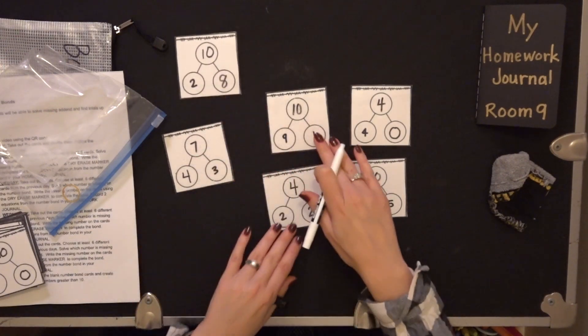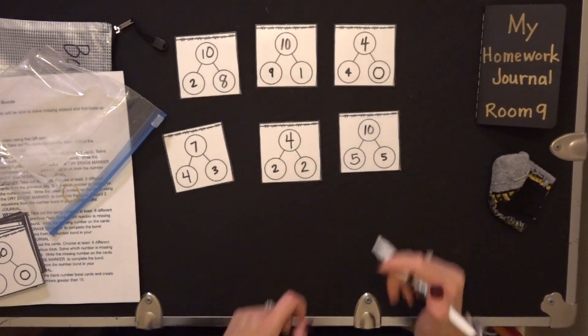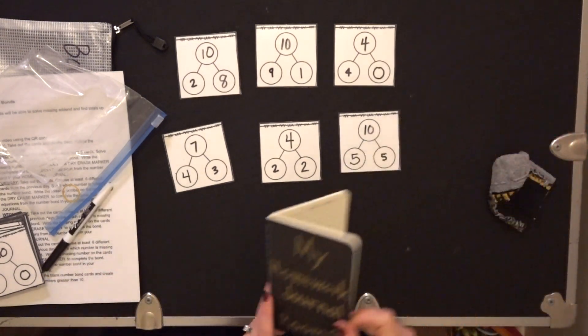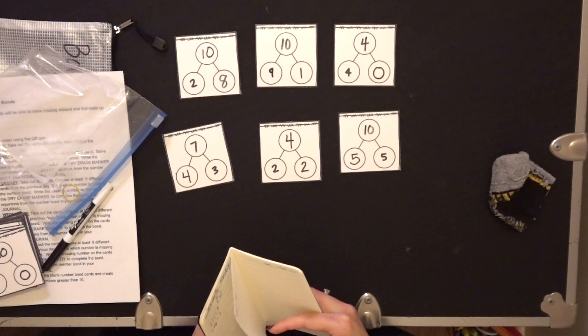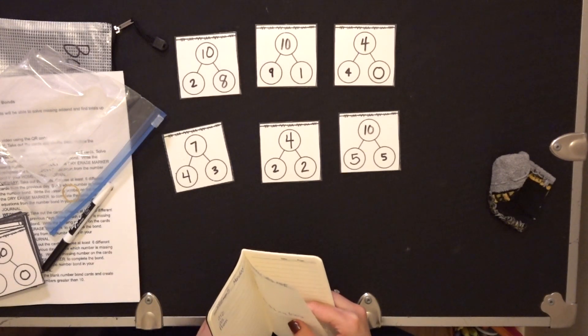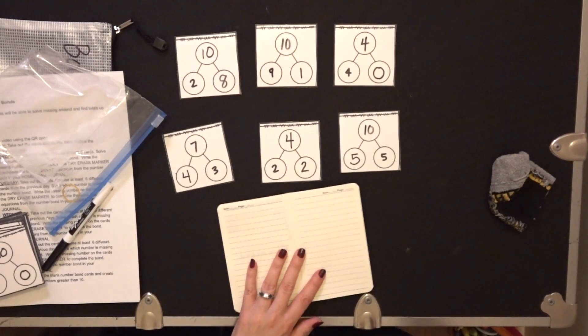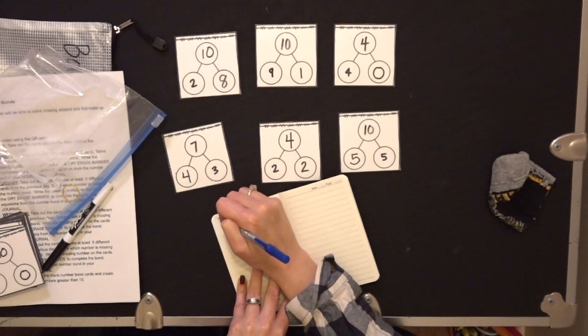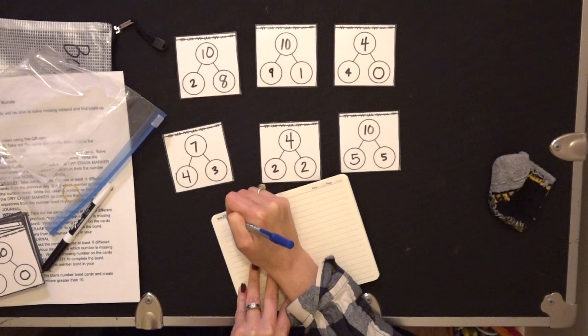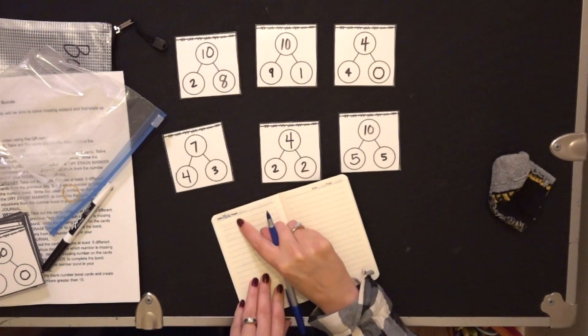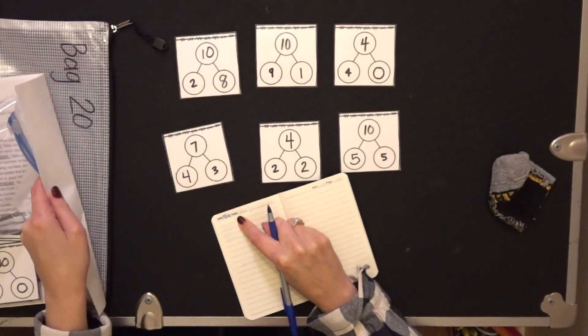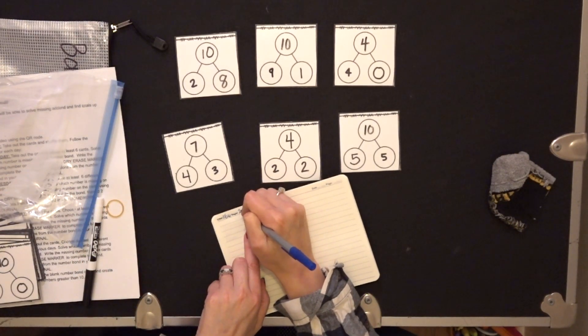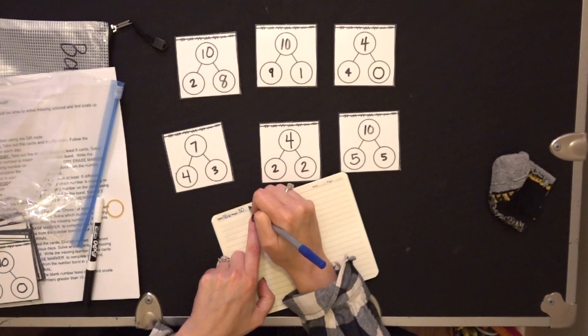Now I'm finished that on Monday. So I'm going to then record in my homework journal. I'm going to go to the next available page in my homework journal and I'm going to write the date. Where it says page, I'm going to write the bag number. This is bag 20, so I will write 20 here and then I will write Monday.